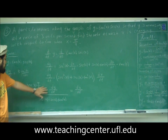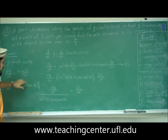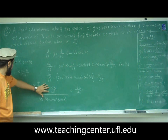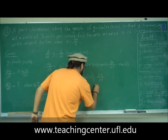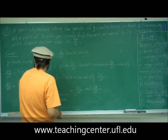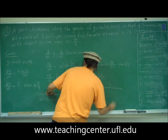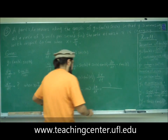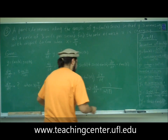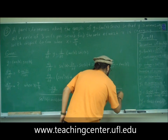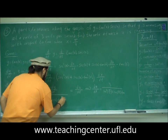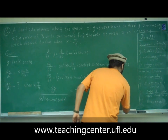Alright, so we want dx/dt. We have dy/dt — they gave us 3 units per second — and x is pi over 4. So we plug pi over 4 into the expression and plug in 3 for dy/dt. This gives dx/dt equals 3 divided by secant cubed of pi over 4, plus secant of pi over 4 times tangent squared of pi over 4.